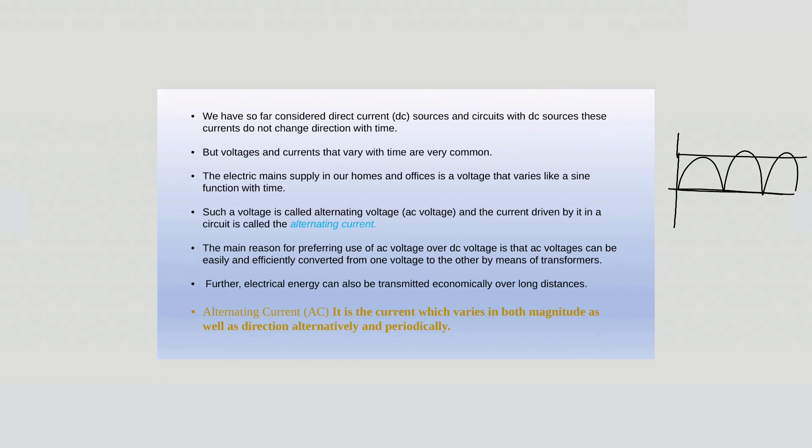But the voltage and current which vary with time are very common. The electric main supply in our homes and offices have sine function-like waves. So if we talk about the current and voltage coming to our houses or offices, it would be somewhat like this, a sine wave. We can see that this sine wave attains a maximum value at a point, then attains another maximum value in the negative direction.